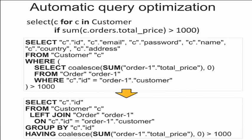Another feature in Pony is automatic query optimization. When we translate a generator to SQL, we may get a query with a correlated subquery — one that uses values from the outer query and must be evaluated for each row selected, which can be inefficient. There is a well-known technique of replacing a correlated subquery with a left join, and Pony does this optimization automatically.